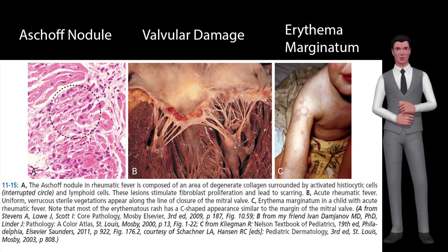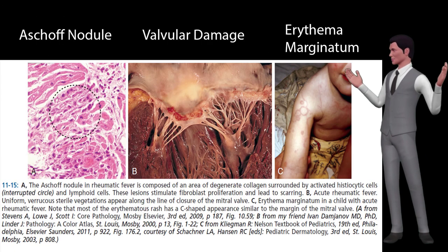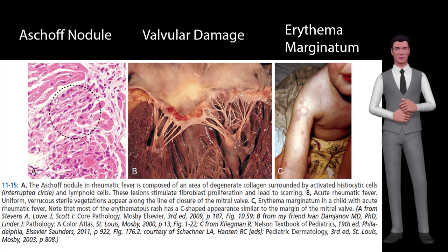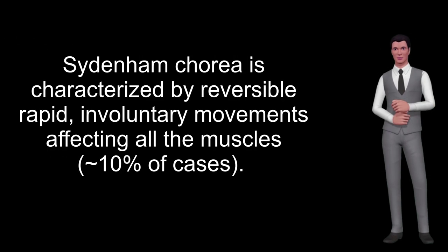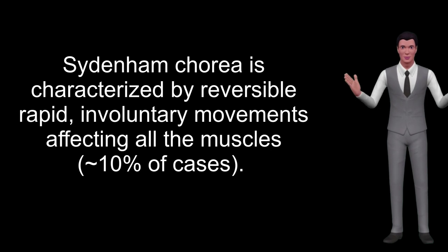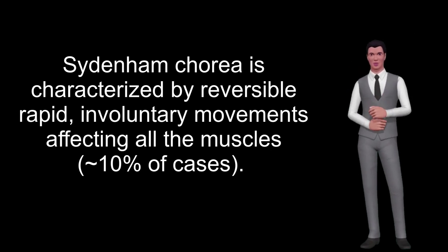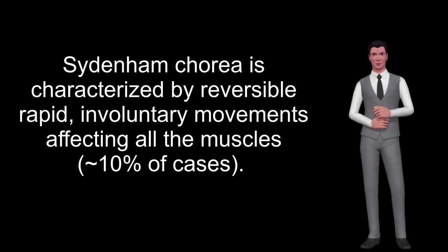Erythema marginatum presents as evanescent circular rings or C-shaped areas of erythema around normal skin, occurring in approximately 10% of cases. Sydenham's chorea is characterized by reversible, rapid involuntary movements affecting all the muscles, occurring in approximately 10% of cases. It is a late manifestation of acute RF.